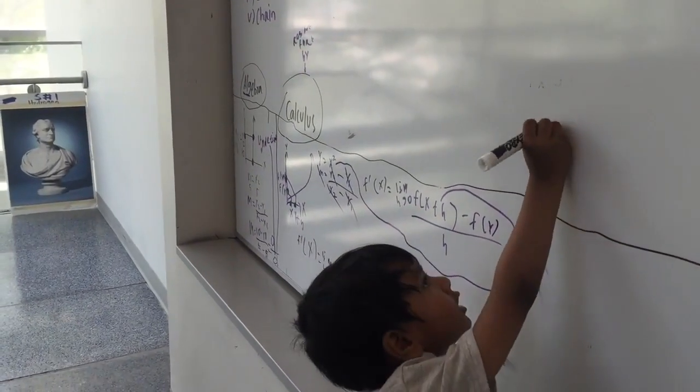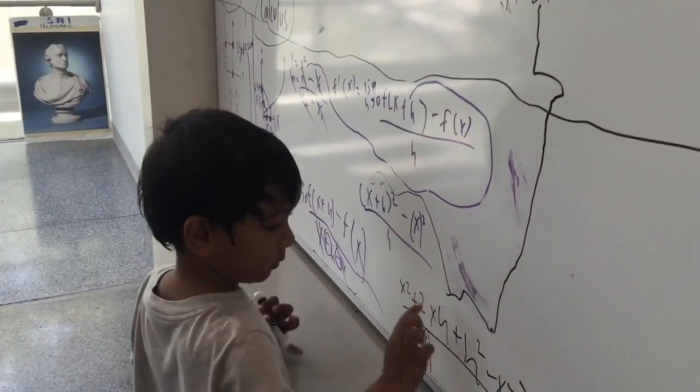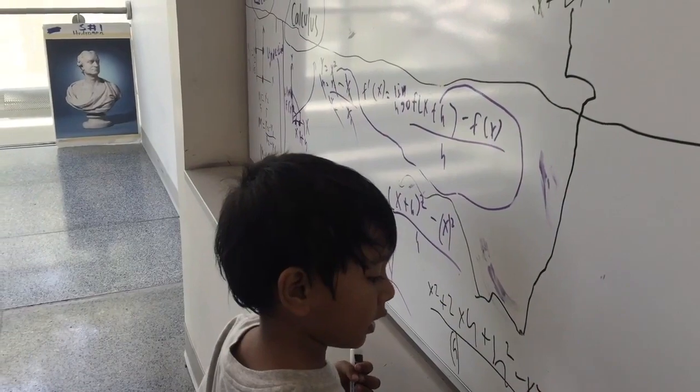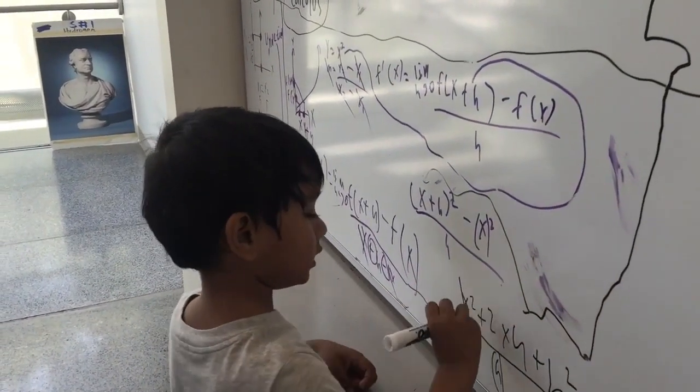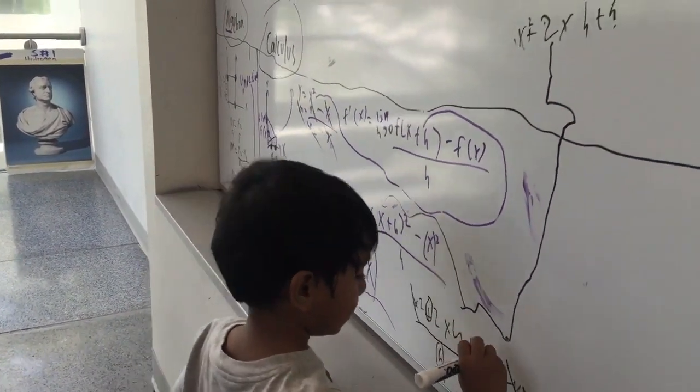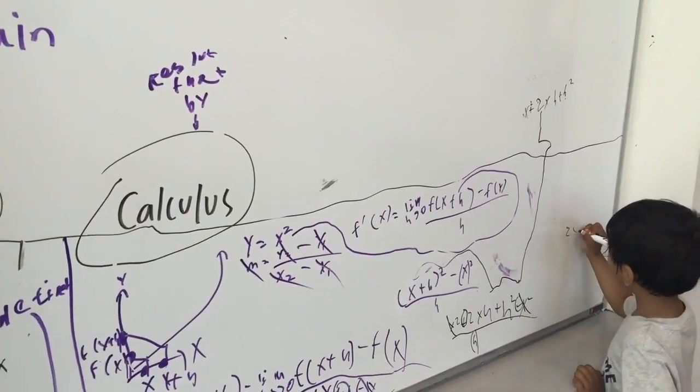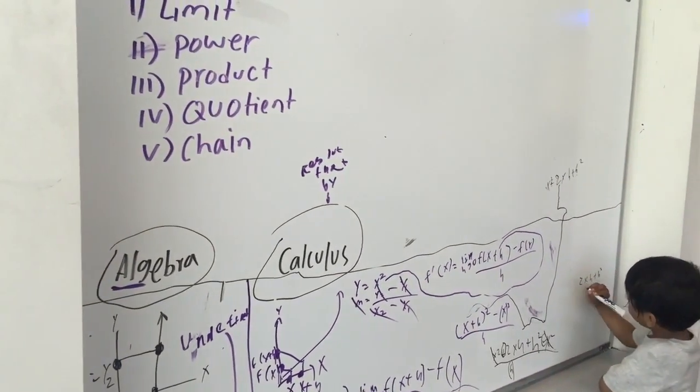x squared plus 2xh plus h squared. The x squareds cancel because they are positive and negative. 2xh plus h squared over h.